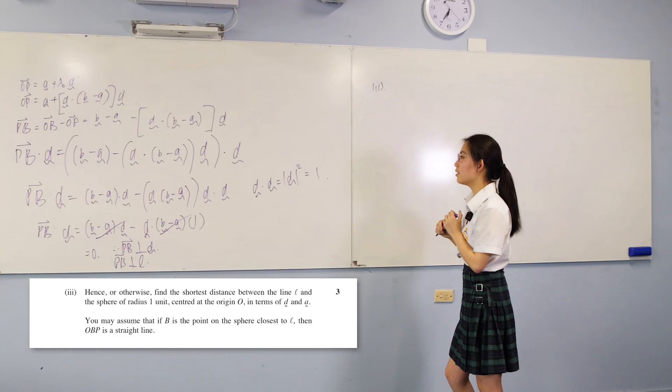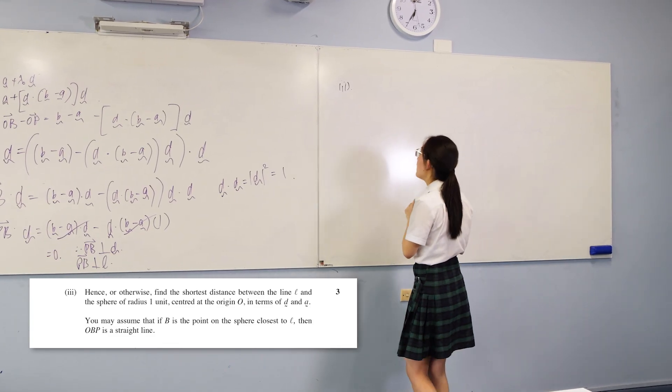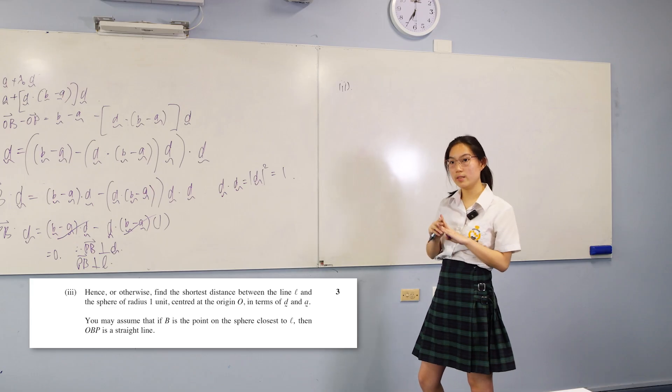For part 3, we want to find the minimum distance between p on the line l and b, a point on the unit sphere.